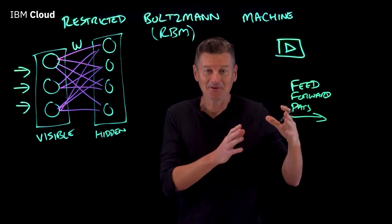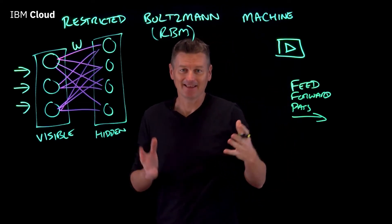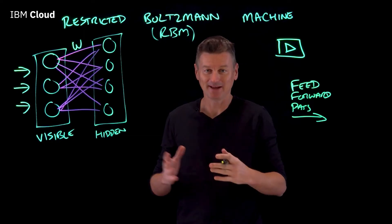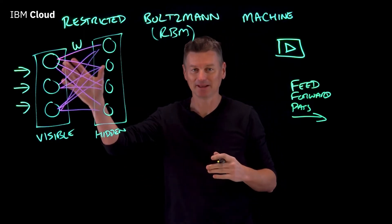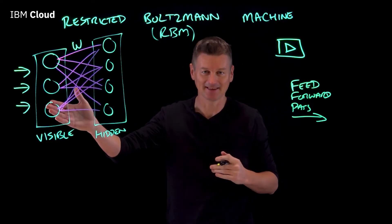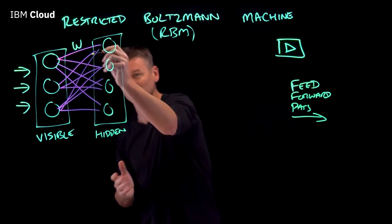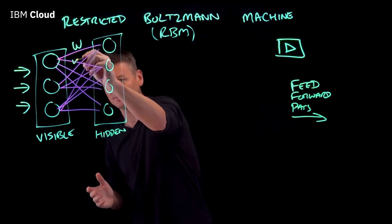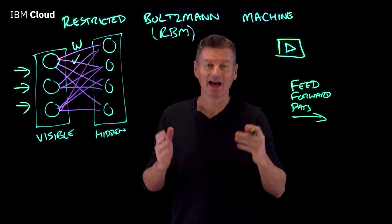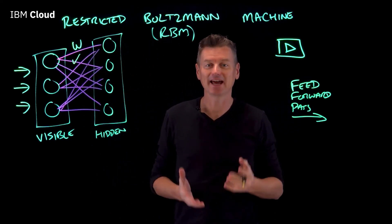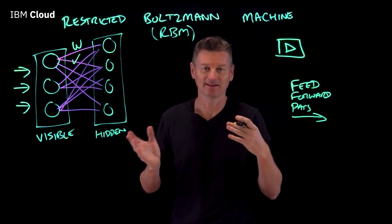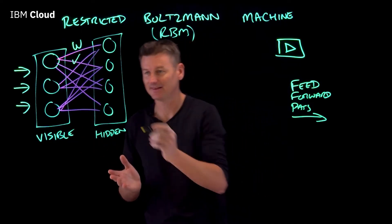In the feed-forward pass we're basically identifying the positive associations, meaning the link between the visible unit and the hidden unit is a match. We're also looking for negative associations, where the link between the two nodes is actually negative.